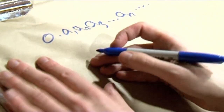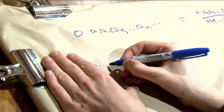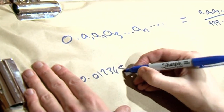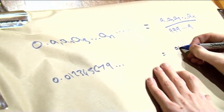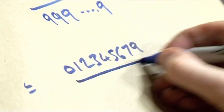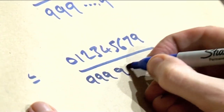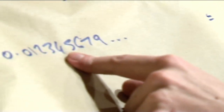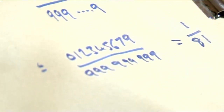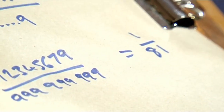For 1 over 81, we wanted 0.0123456790123... repeating, so that's 012345679 over 999,999,999 — nine nines. That gives you that decimal representation, and it simplifies to 1 over 81. You can make any repeating decimal this way, but what makes it special is that it simplifies so nicely to a clean fraction.